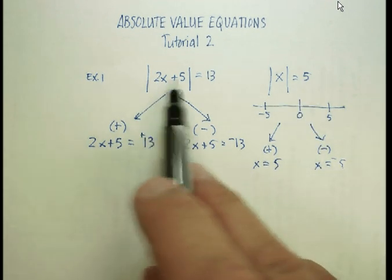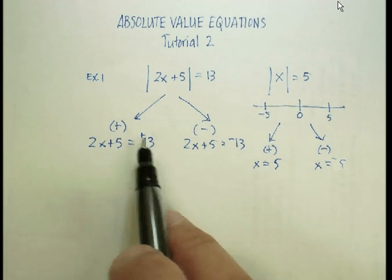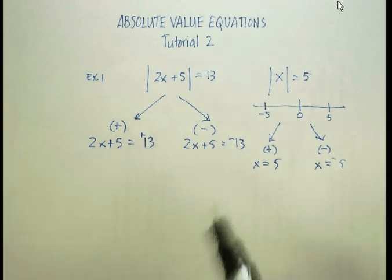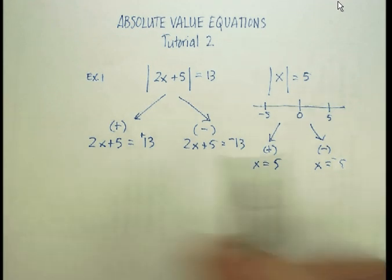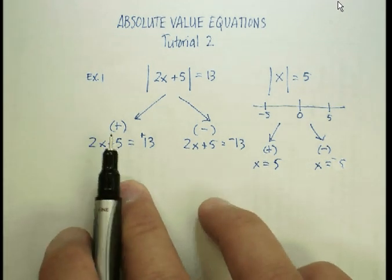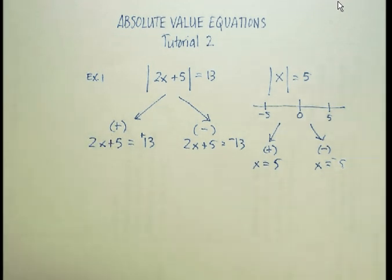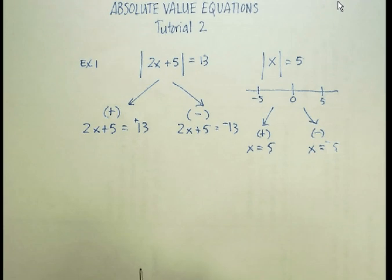I took my 2x plus five out, and then I made it positive on this side, negative on that side. And you do that for all of these types of equations, okay? And then you solve them separately. Difficult problems are simple problems stacked up together. So let's go ahead and take these apart.